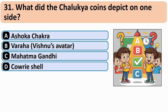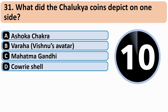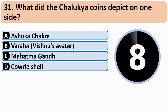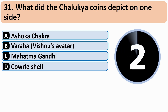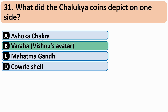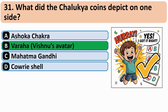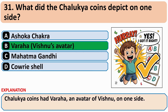Why did the Chalukya coin depict on one side? The correct answer is B — Varha, Vishnu's avatar.